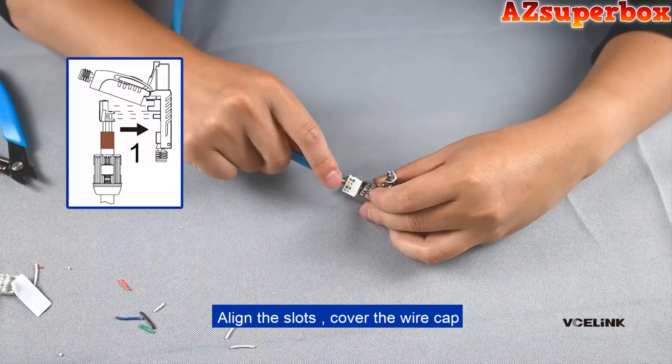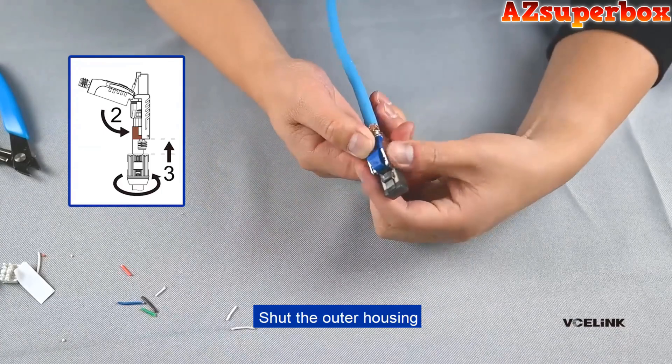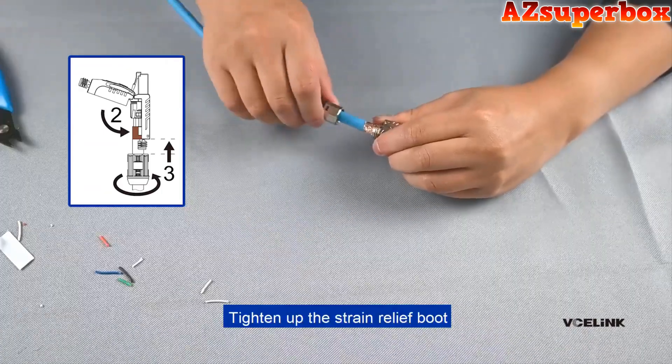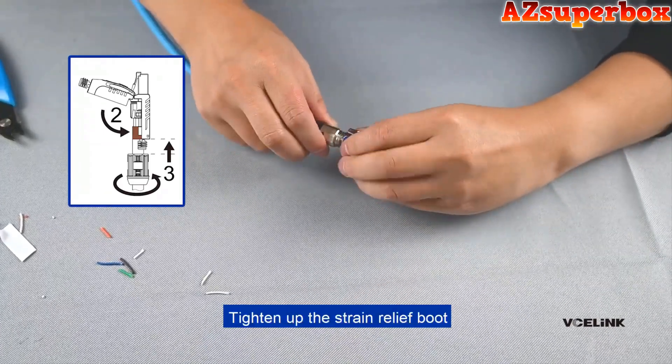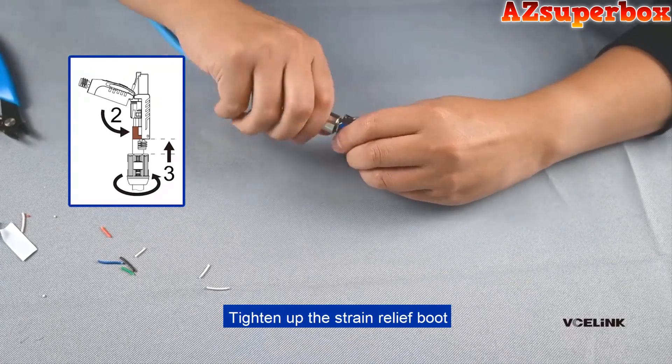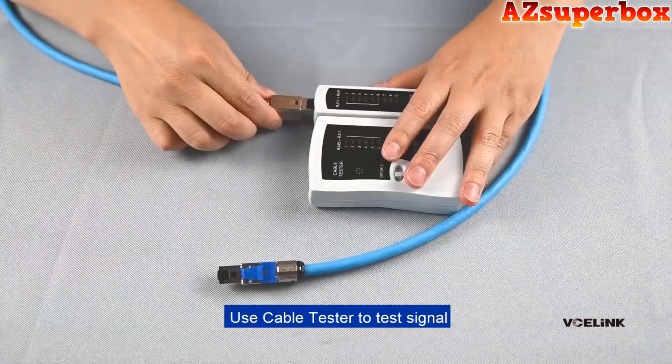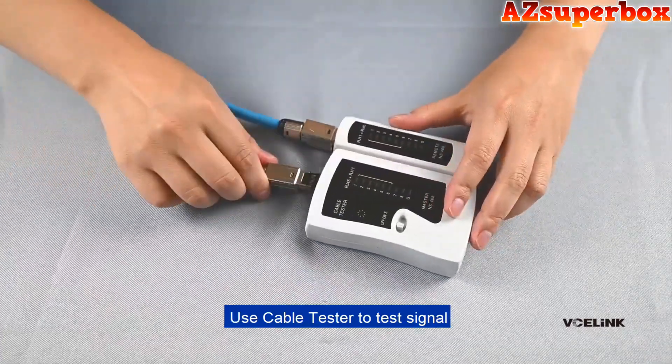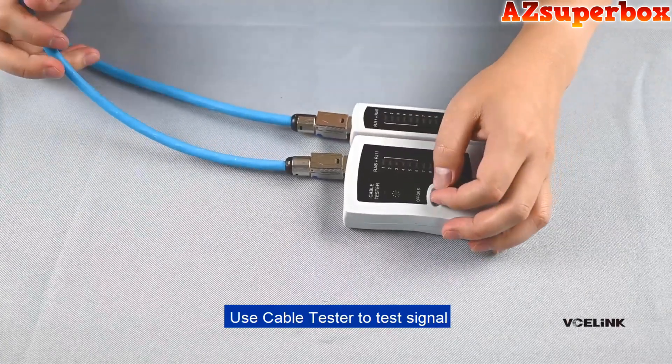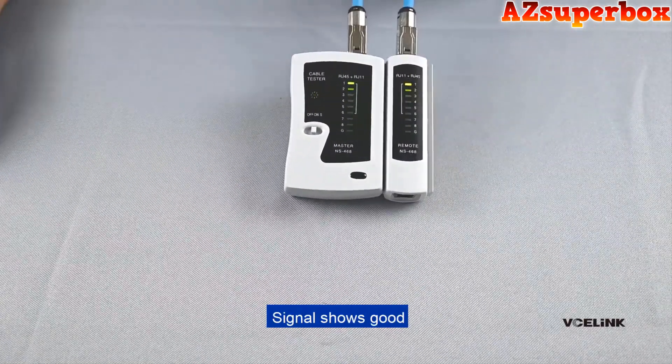Align the slots, cover the wire cap. Shut the outer housing. Tighten up the strain relief boot. Use cable tester to test signal. Signal shows good. Complete.